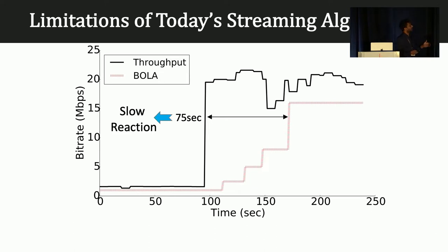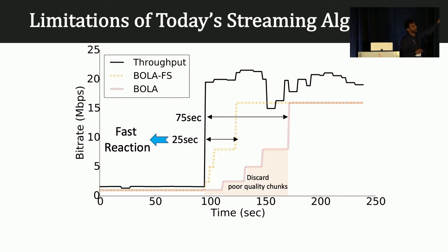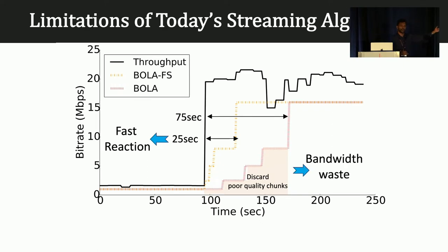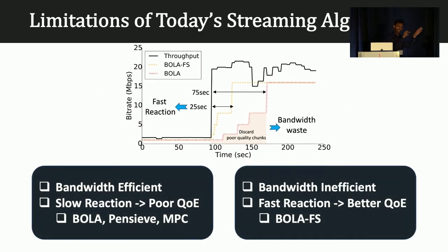There are other types of algorithms. One example is BOLAFS, which does fast switching — we see about a 25-second reaction time here. As soon as it detects the network throughput increase, it re-downloads a higher-quality version of segments already downloaded and discards the low-quality chunks. But the problem is that there is a bandwidth waste because the low-quality chunks are discarded without being displayed. So in the literature and industry, most solutions fall into these two categories: either bandwidth efficient with slow reaction, or fast reaction but bandwidth inefficient.